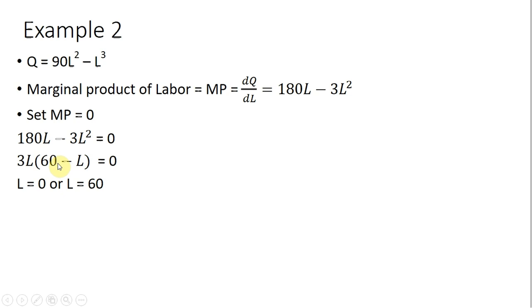Now we just need to find the values of L to have this left-hand side equal zero. So if L equals 0, okay, zero times 60 is just zero. And finally, if L equals 60, in parentheses, we have 60 minus 60 or zero.